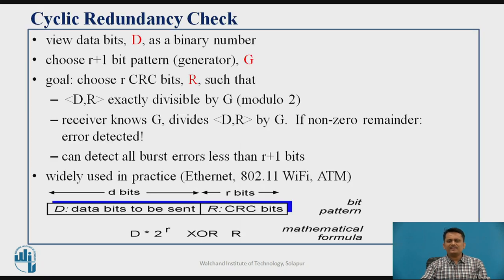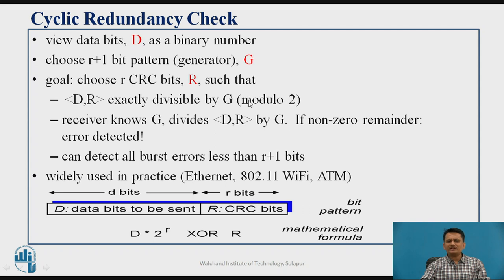We will go for CRC — cyclic redundancy check — as an error detection technique, where only error is detected. Suppose D number of data bits you want to send. We take the help of a generator polynomial G, which has r+1 number of bits. We use r bits such that we concatenate the data bits along with the CRC code, which is generated using a modulo-2 division technique. In mod-2 operation, addition and subtraction is analogous to the XOR operation. Within the example, we will see how this mod-2 division is carried out.